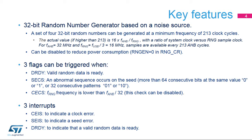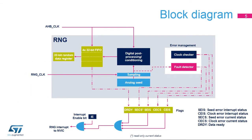An interrupt source can also be enabled to indicate an abnormal seed sequence or frequency error. This simplified block diagram of the RNG shows its basic functional and control modules.